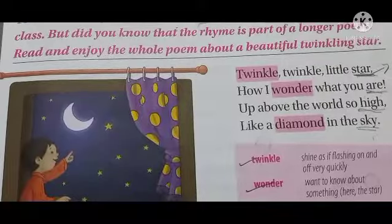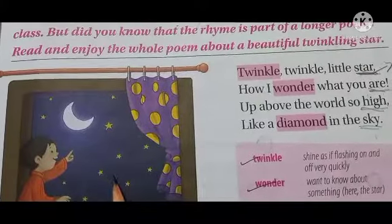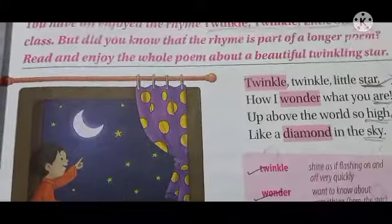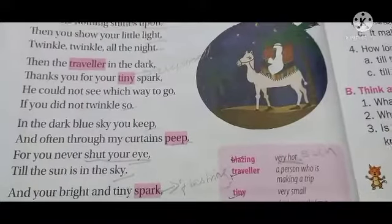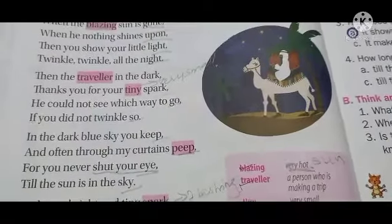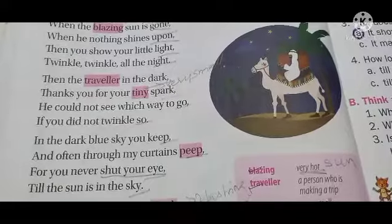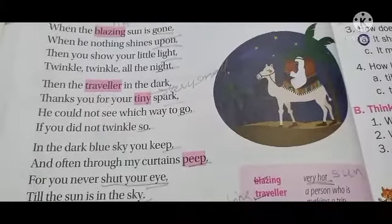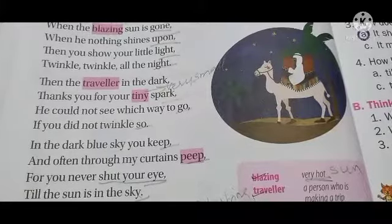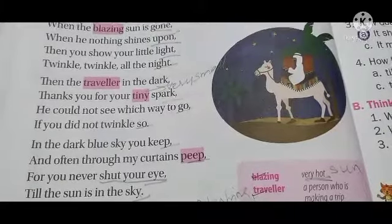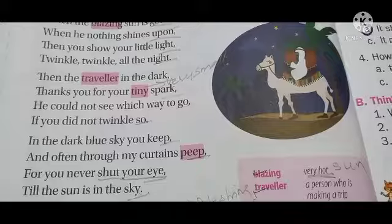Stars look like a diamond. The poet says that the stars look like a diamond in the sky. Stars are helping in many ways — it gives light in the night time. The traveler moves from one place to another place, and with the help of stars, they can move from one place to another place easily.